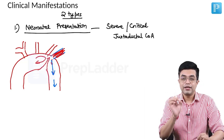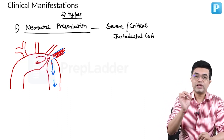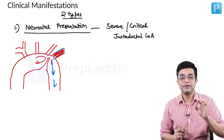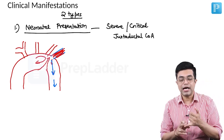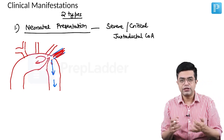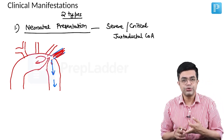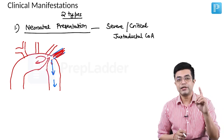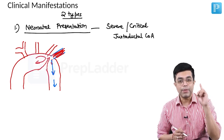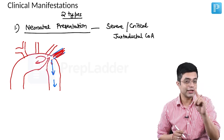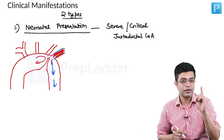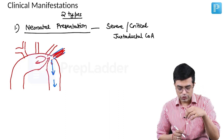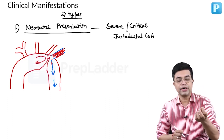As soon as the ductus arteriosus closes, these patients present with severe shock. There will be absent pulses, especially in the lower limbs, oliguria, and severe metabolic acidosis. These children will develop pallor with shock — they will not develop cyanosis. There is still a positive blood supply happening to the lower region, but without intervention the patient will die.